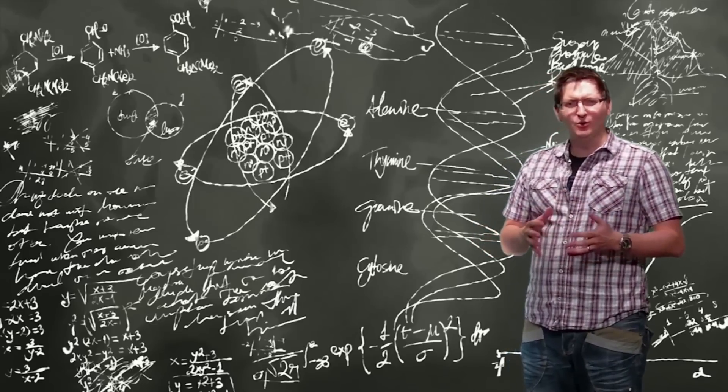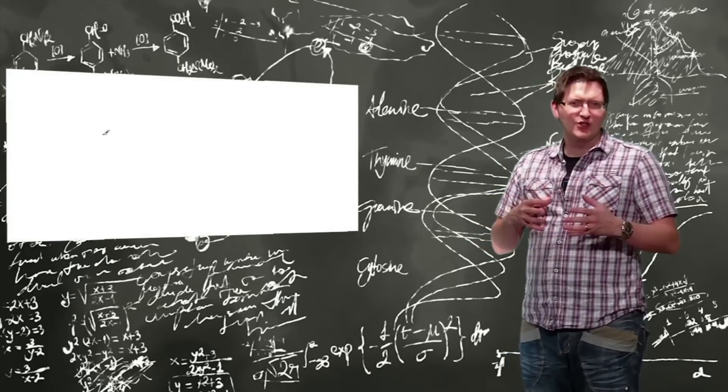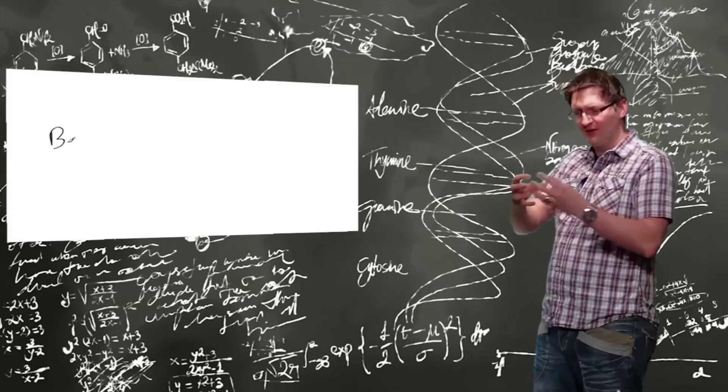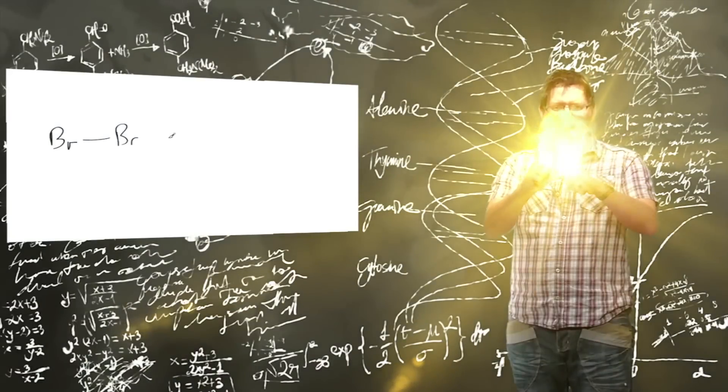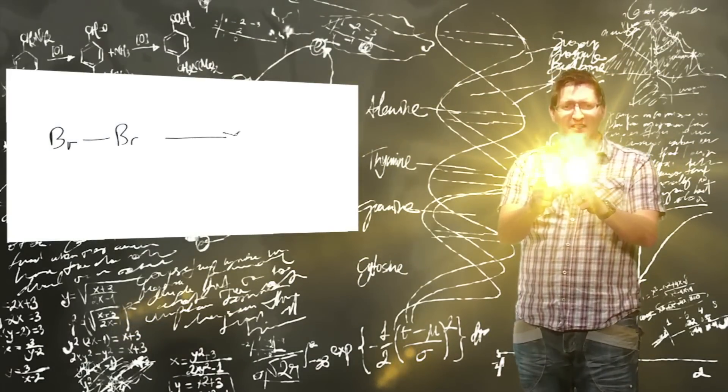If this is subjected to ultraviolet radiation, the electrons - imagine I've got them in my hand here, actually imagine my hands are the bromine atoms here stuck together and the electrons as you can see here.